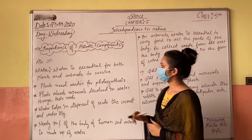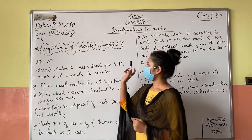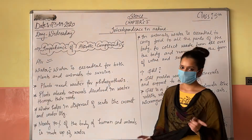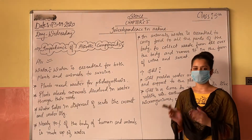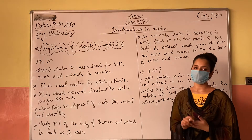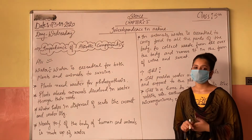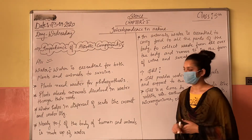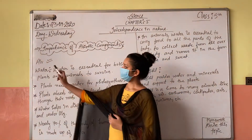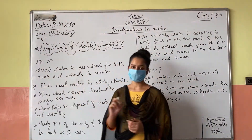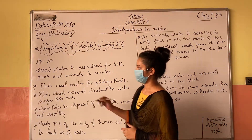Let's start with the importance of abiotic components. Abiotic components include living and non-living things, but non-living things are particularly useful. We discussed some of this in the last class; today we will study about water.